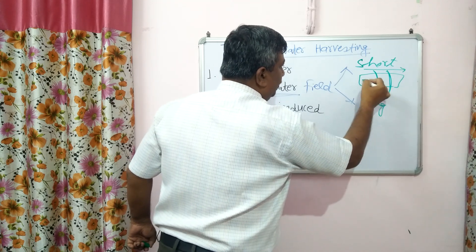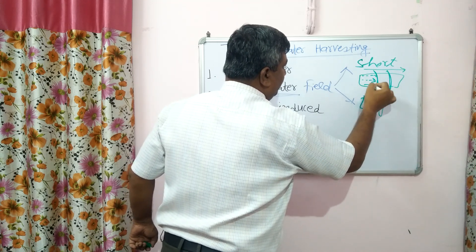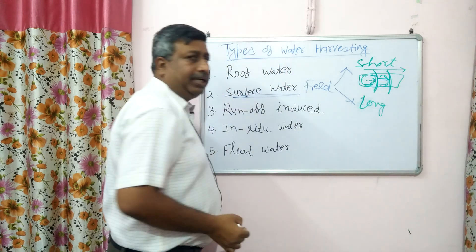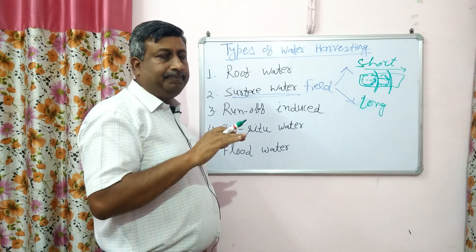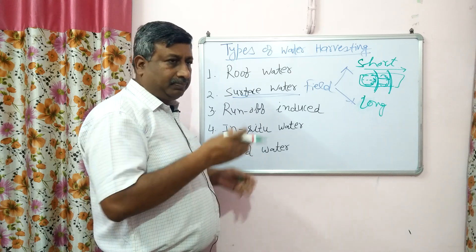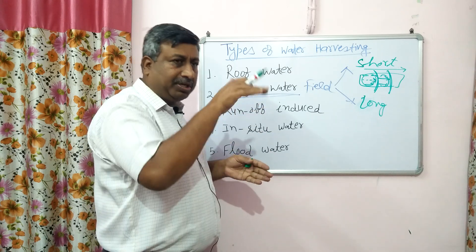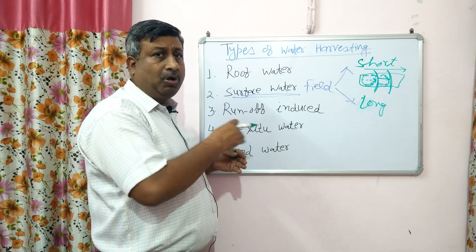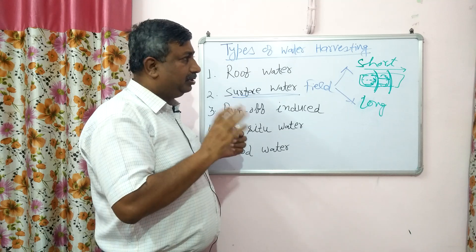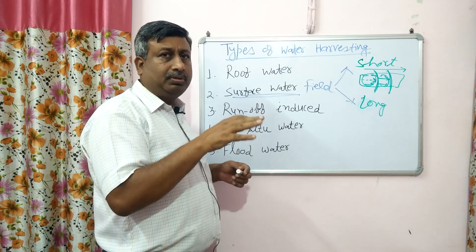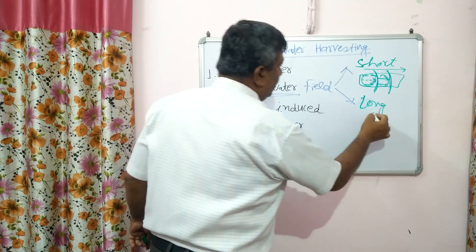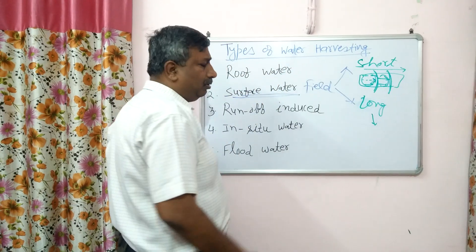Suppose the field has a slope — bunds are constructed along the contour lines to restrict or hinder the water, so it remains in the field. This is known as a contour bund. First there are field bunds around and inside the field, then contour bunds along the slope, and then deep trenches so that water is stored.